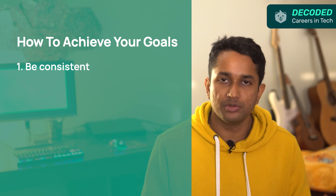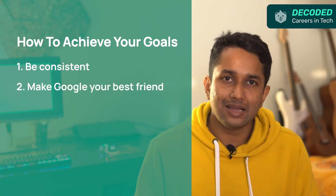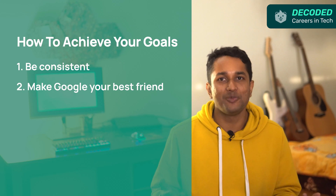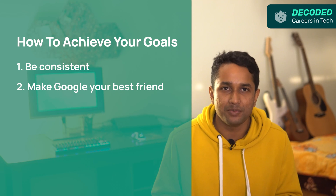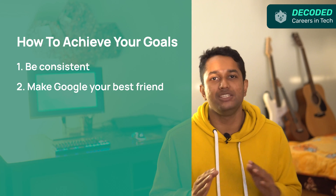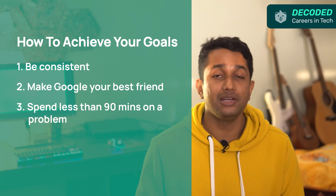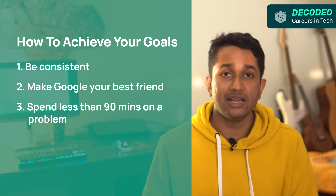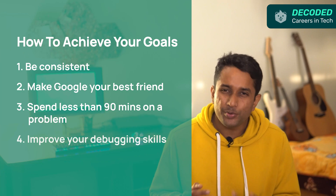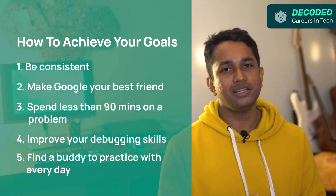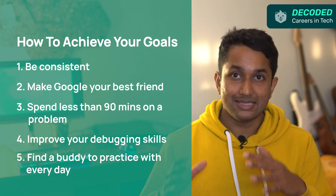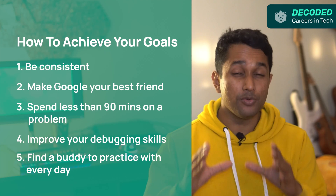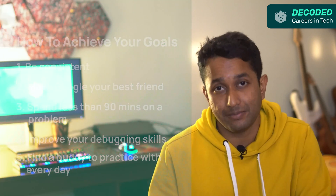So how should you practice to achieve these goals? Be consistent — two problems per day is ideal. Syntaxes come naturally with practice, so don't rack your brain if you can't remember a syntax; look online immediately. Spend no more than 90 minutes on a problem — if you're stuck, come back to it after a day. Improve your debugging skills. Find a partner to buddy up with and practice every day. This helps sustain motivation and keeps you more consistent over time.